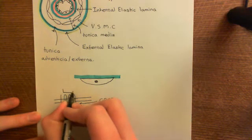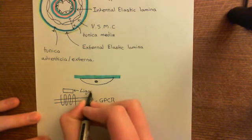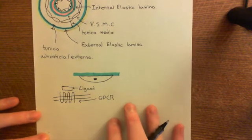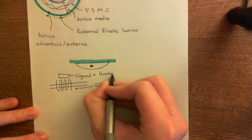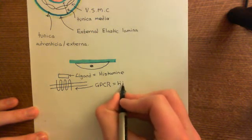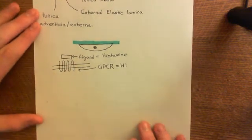A ligand will come and bind to the GPCR. There are a huge number of different inflammatory mediators that can cause type 1 activation of endothelial cells — histamine is not the only one. All these different inflammatory mediators will have their own receptor on the basolateral membrane of the endothelial cell, but they will all be G-protein coupled receptors, and they'll all be coupled to the GQ heterotrimeric G-protein. Our archetypal ligand is histamine, so our GPCR in this case is the H1 receptor. But there are a number of other inflammatory mediators, and they will all have their own GPCRs which activate the GQ heterotrimeric G-protein.